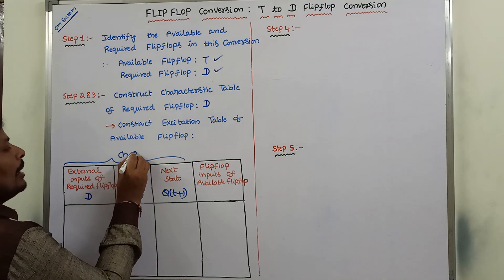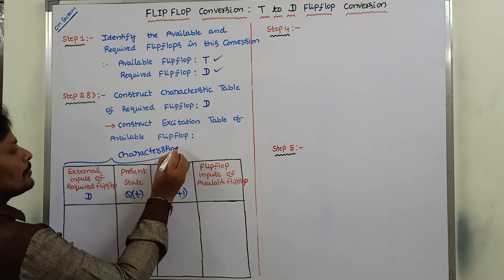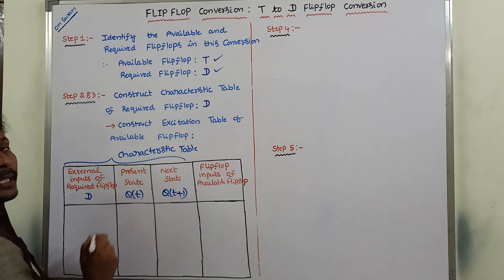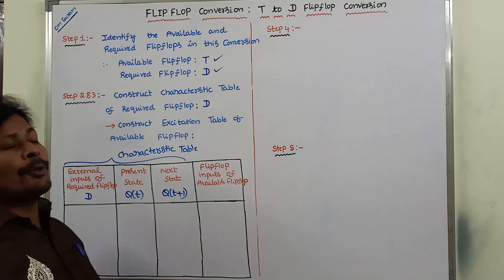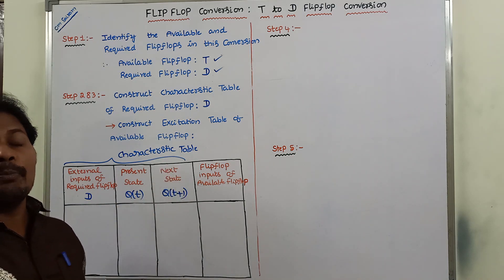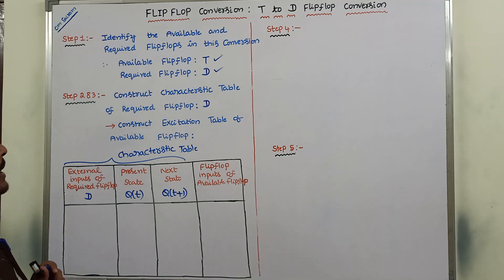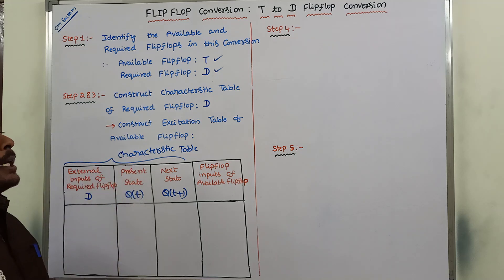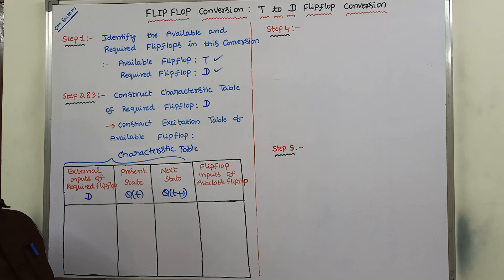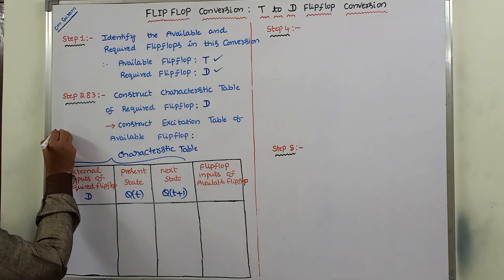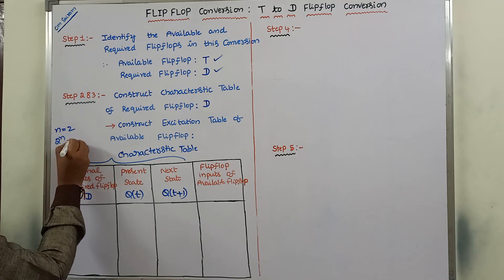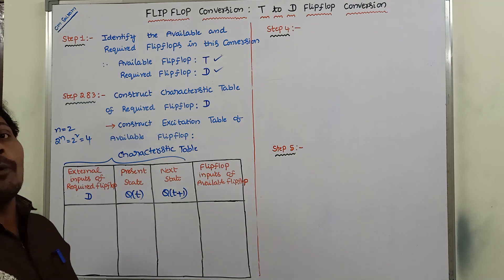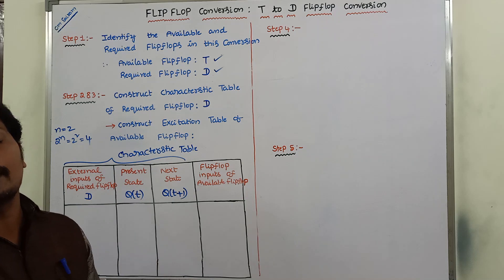In the characteristic table, the first two columns — D and Q(t) — are considered input columns. With two inputs, we get 2² = 4 possible input combinations: (0,0), (0,1), (1,0), and (1,1). For each of these combinations, we find the next state Q(t+1) of the D flip-flop.